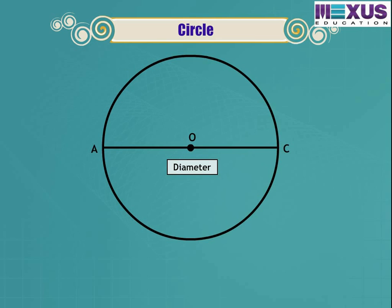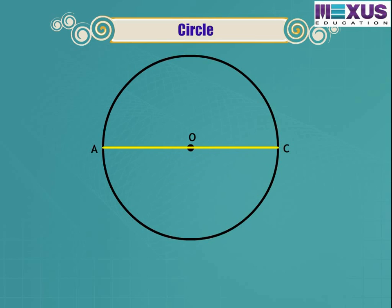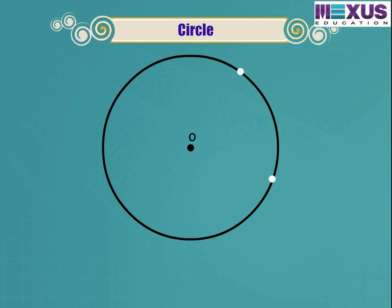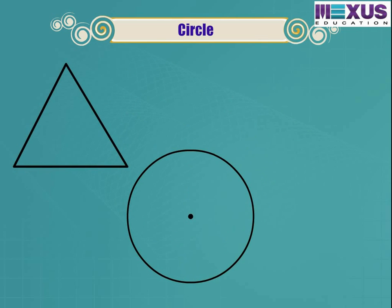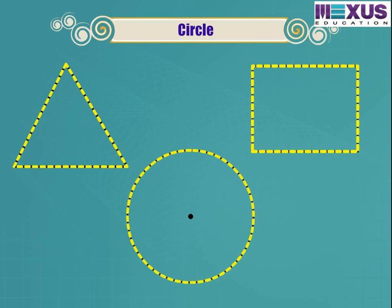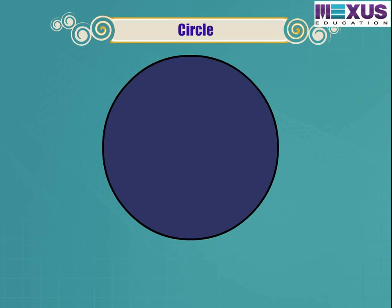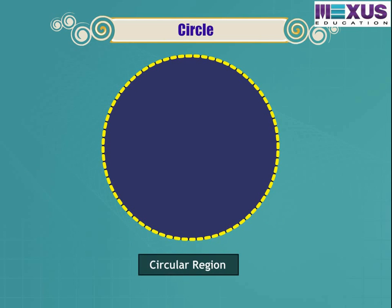The chord passing through the center of the circle is called the diameter of the circle. Here, AC is the diameter. The length of AC equals the length of AO plus OC — that is, the diameter is twice the radius of the circle. The distance between any two points on the circumference is called an arc of the circle. Here, CD is the arc of the circle, denoted as arc CD. Like triangle and quadrilateral, a circle is also a closed figure, so it divides the plane into interior and exterior, with its boundary.